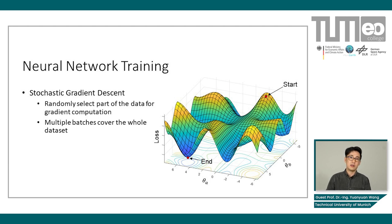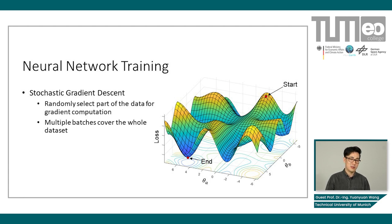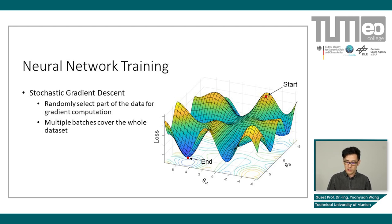By carefully sampling and selection, after many batches you can cover the whole dataset. This is called one epoch. That's why you always hear people say they trained their model for one epoch, or for 100 epochs, and so on.